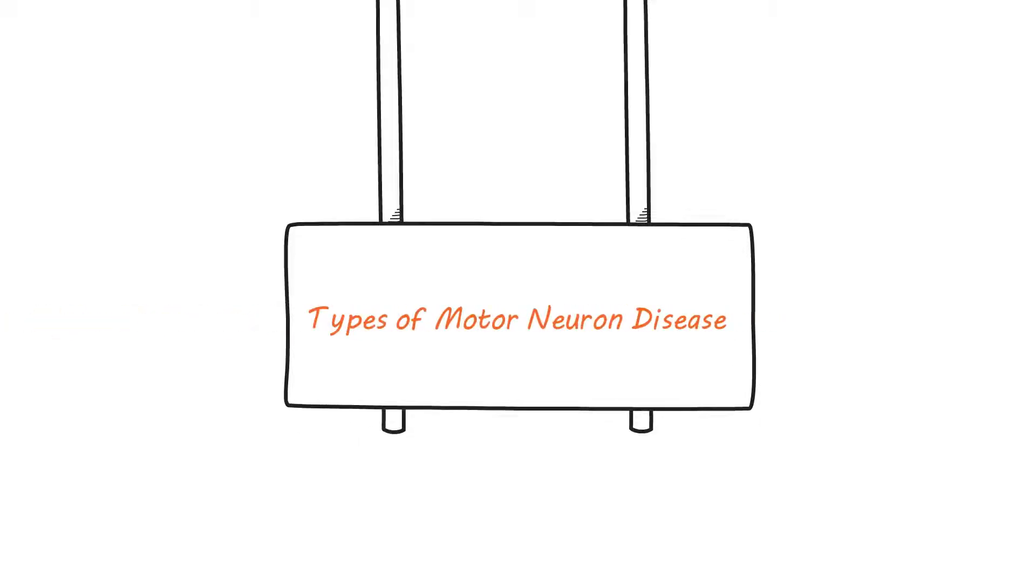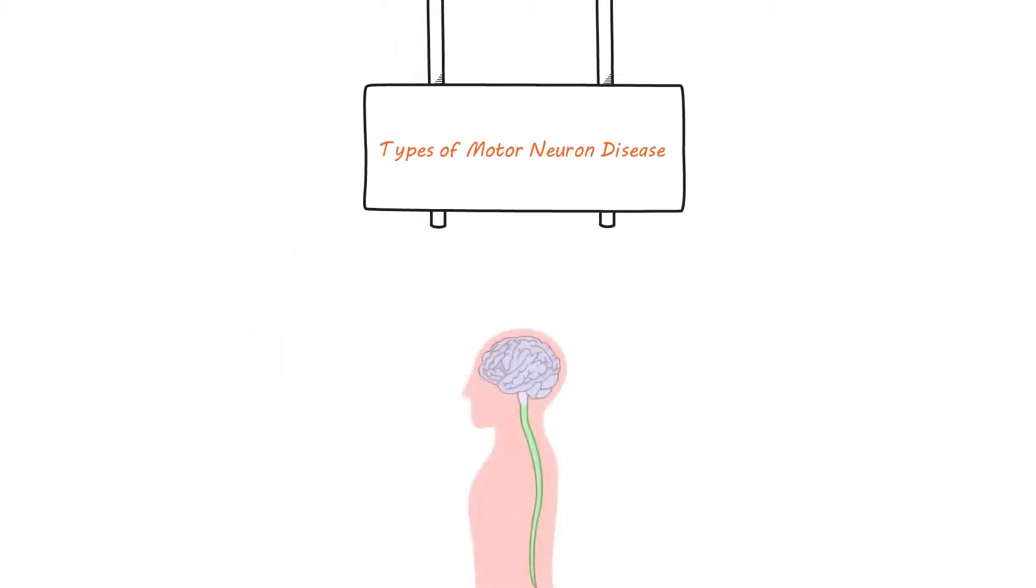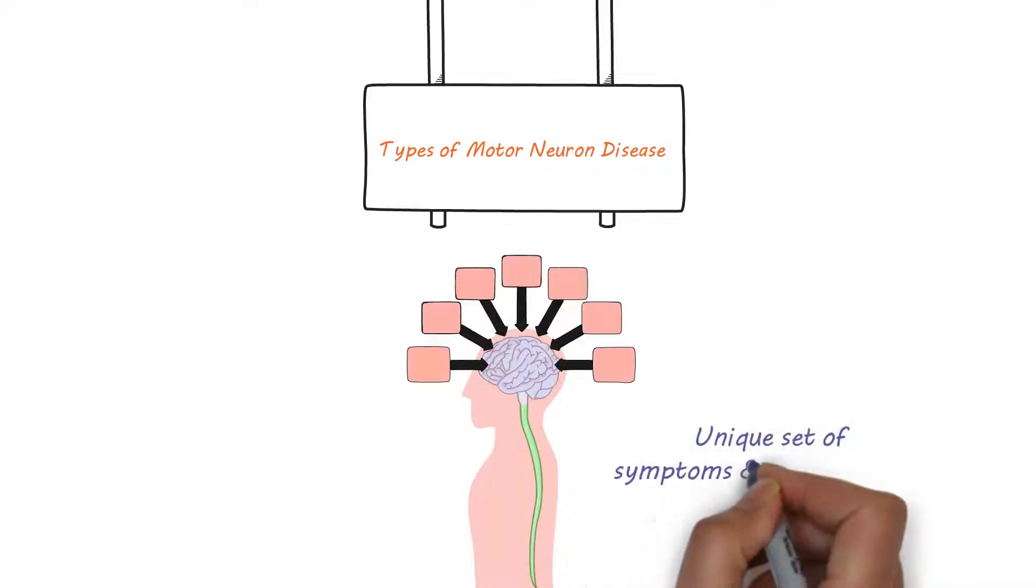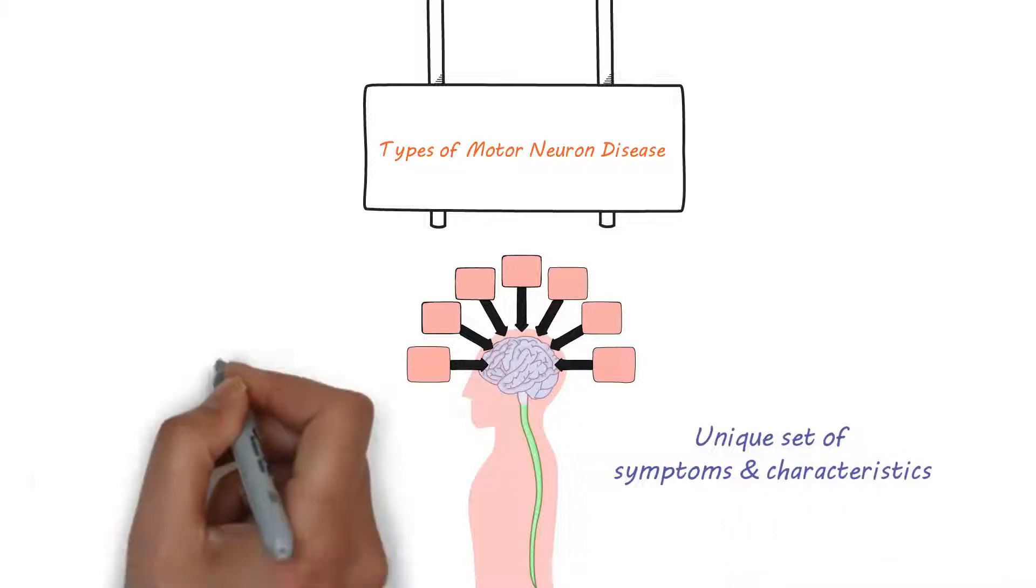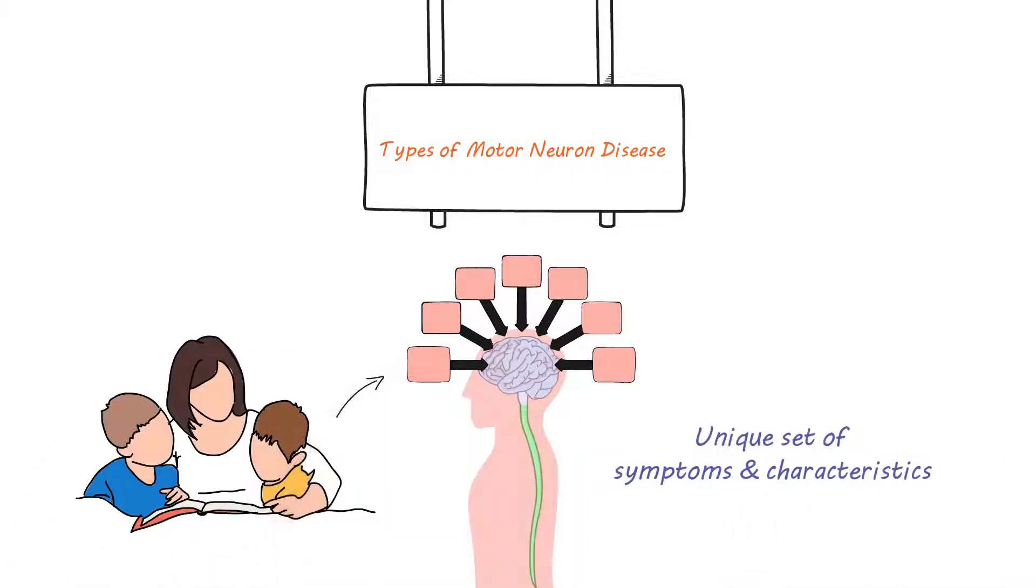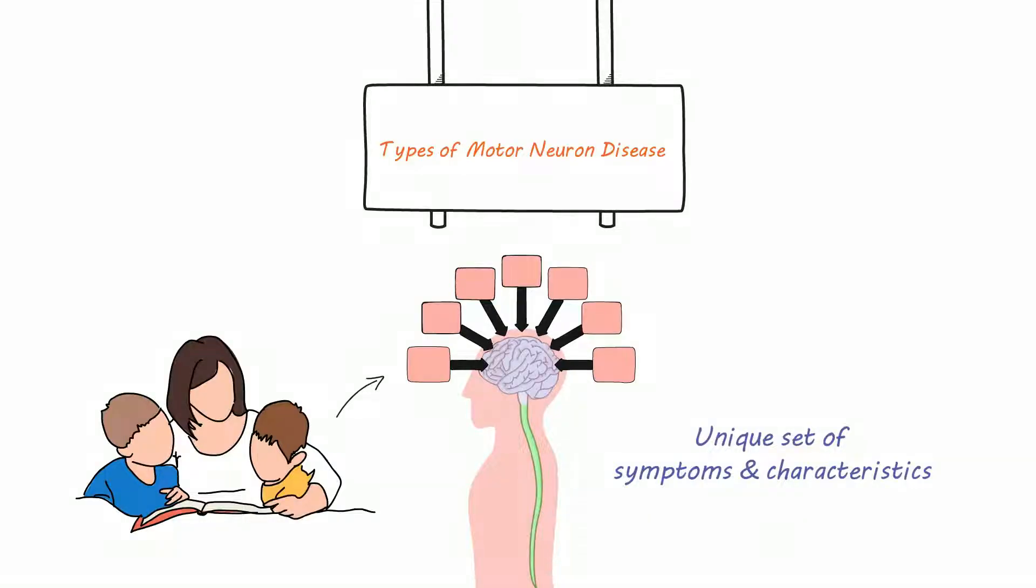Types of Motor Neuron Disease. Motor neuron disease is an umbrella term that encompasses several different types of disorders, each with its own unique set of symptoms and characteristics. It's essential to understand the different types of motor neuron disease to effectively manage and treat them.